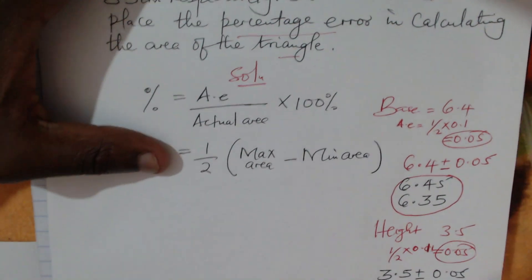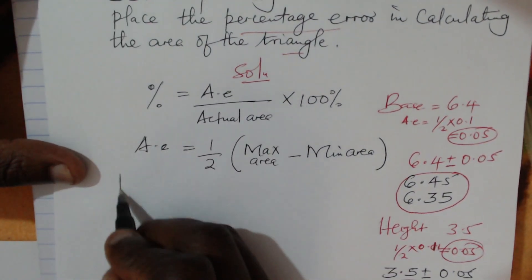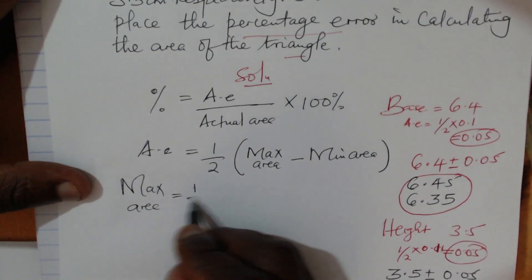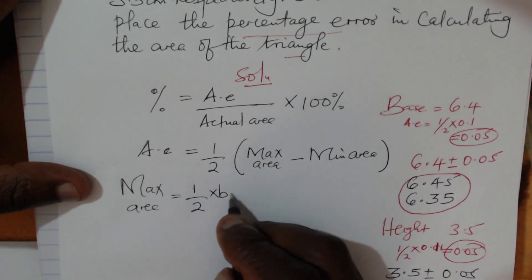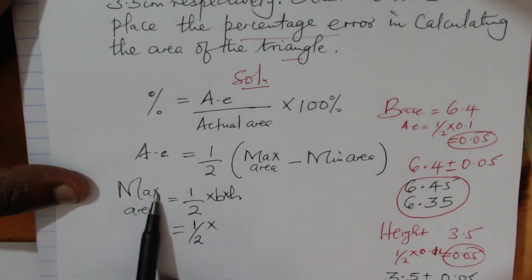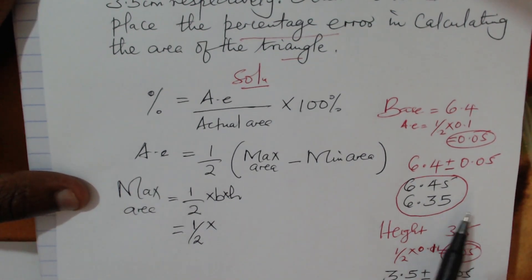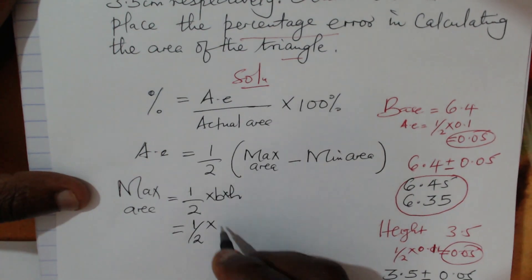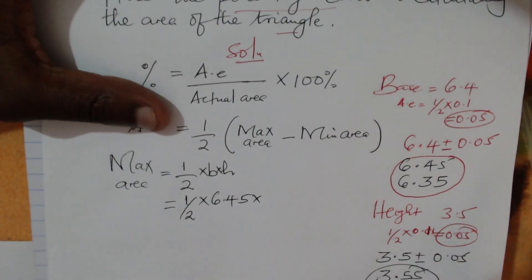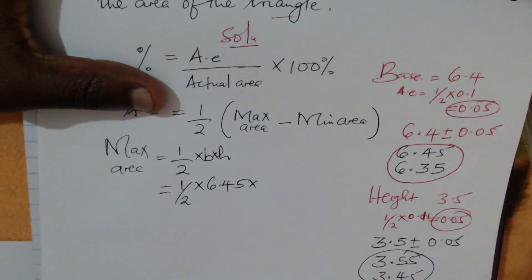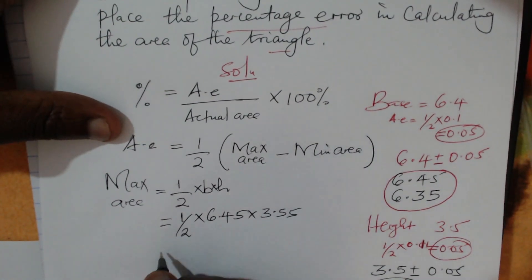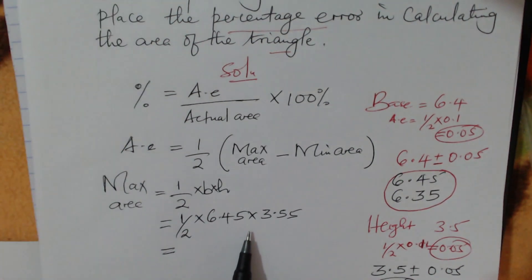Now let's calculate the maximum area. The area of a triangle is one half times the base times the height. For the maximum area, we use the upper limits: one half times 6.45 for the base, and 3.55 for the height, since we use the upper limit for both.